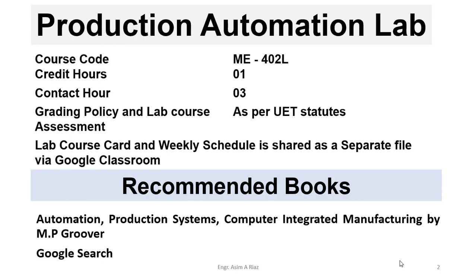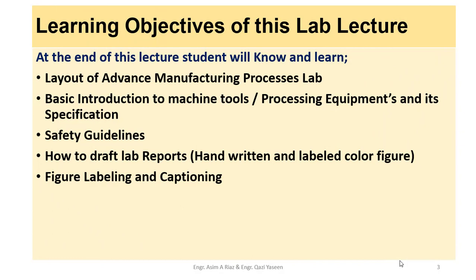You can download that file and check the contents week-wise, including the different CLOs and PLOs targeted in each week. Recommended books include 'Automation Production Systems and Computer Integrated Manufacturing' by M.P. Groover. Apart from this, you can search Google and download multiple books and PDF files to clear your concepts. At the end of this lecture, students will learn the layout of the advanced manufacturing processes lab and get a basic introduction to machine tools and their technical specifications.